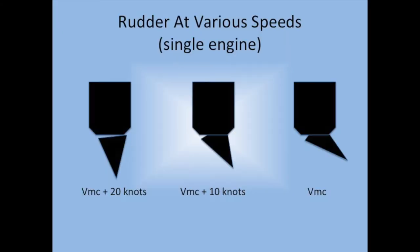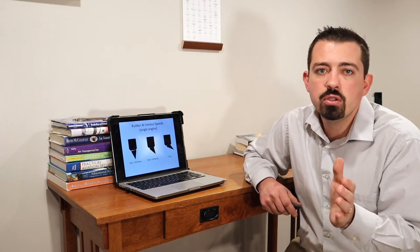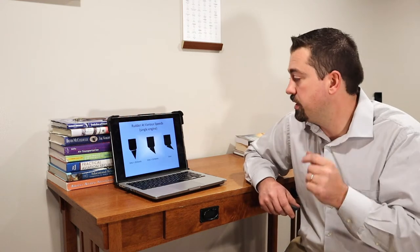This gives us an example. If we're at VMC plus 20 knots, the rudder is going to have more authority. There's going to be more airflow flowing across the rudder, which results in better control of the aircraft. You're at a safer speed. As it decelerates, it takes more rudder to counteract the amount of thrust the engine is producing. And when you reach VMC, you're going to be at full scale deflection. There'll be no more effectiveness of the rudder and you're going to lose control of the aircraft.